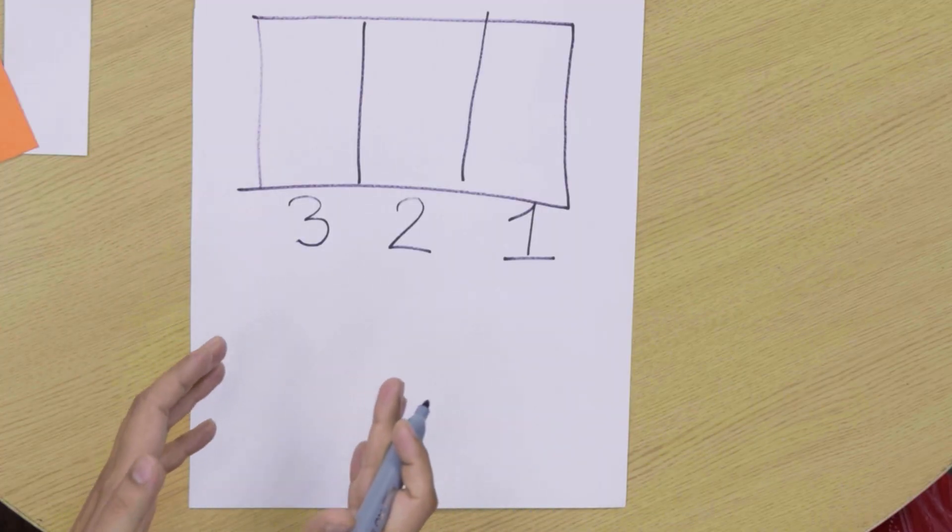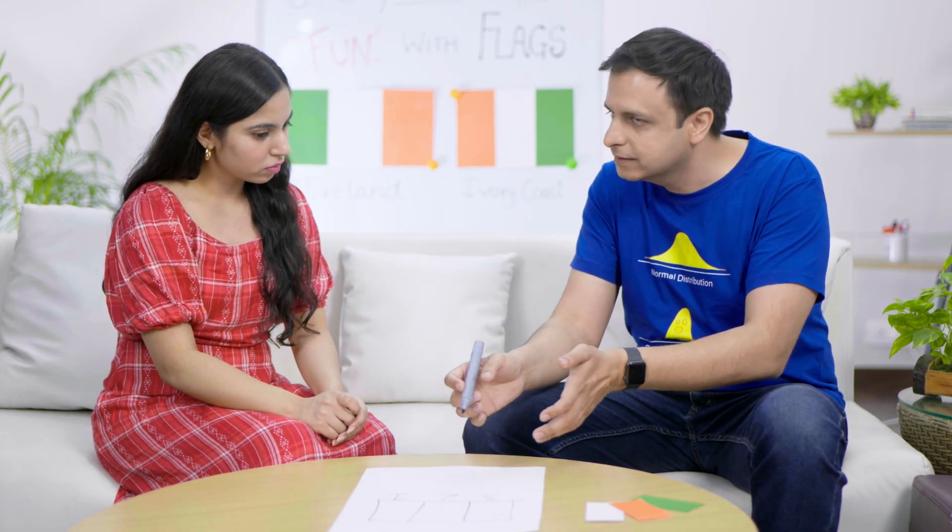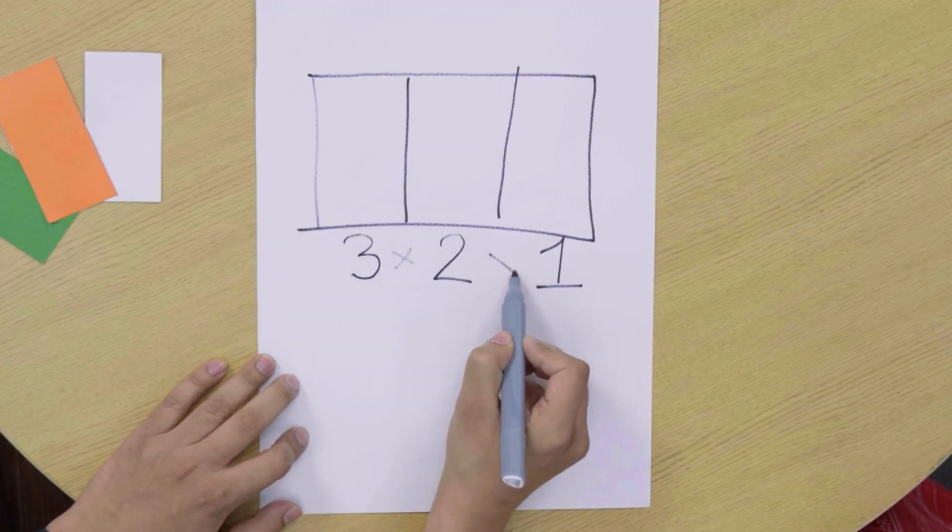Now comes the multiplication principle. To design the flag, we have to pick the first color and the second color and the third color. And given the number of choices we have for each color, the number of flags is? Three times two times one. Correct. That's six flags. That's the same number I got before. Exactly.